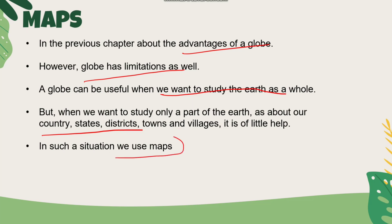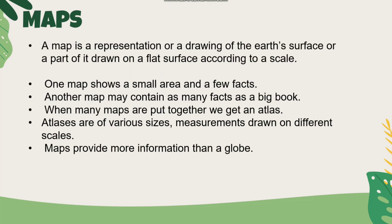We use the map. The map is a representation — this is the definition — it is a representation or a drawing of Earth's surface, or a part of it, drawn on a flat surface according to the scale.